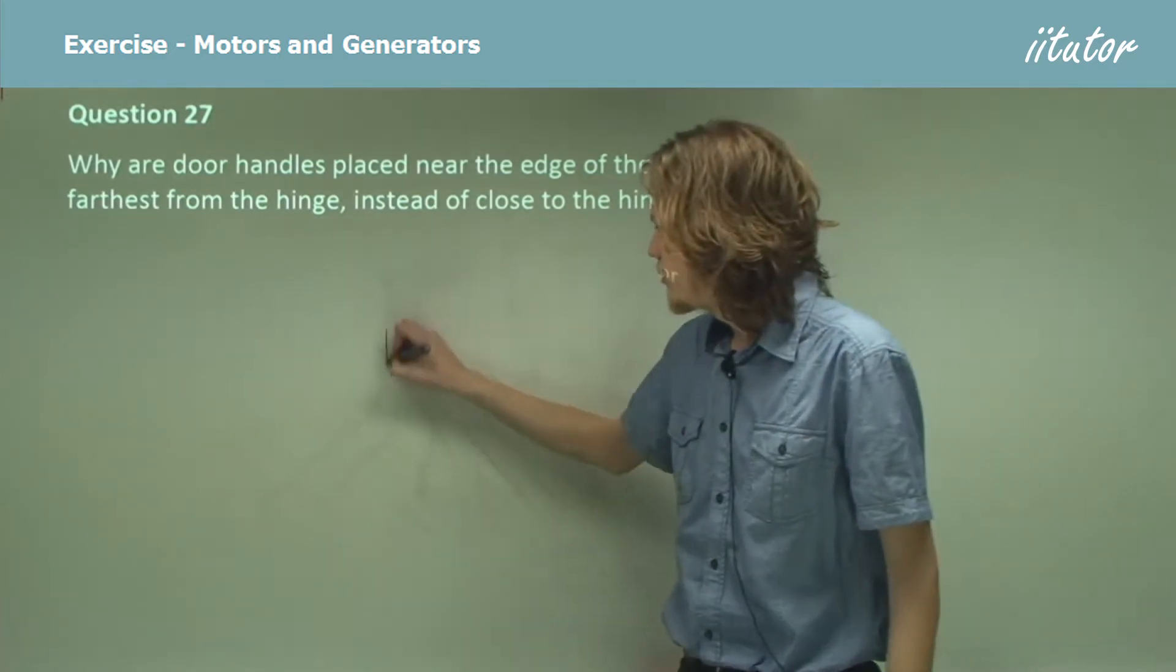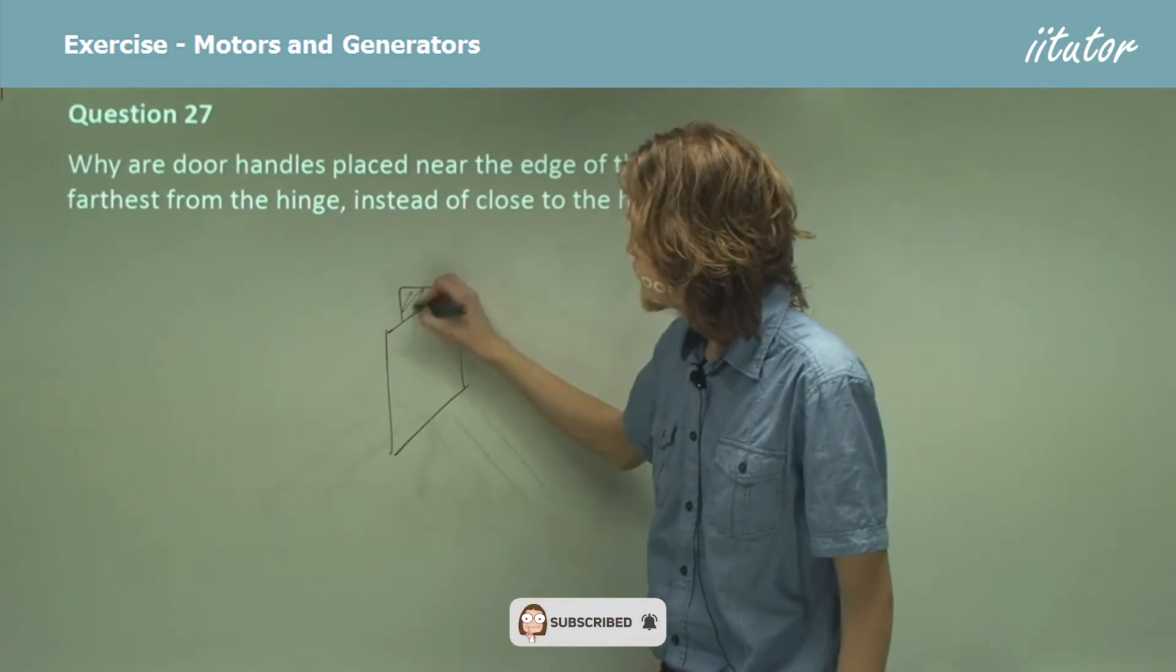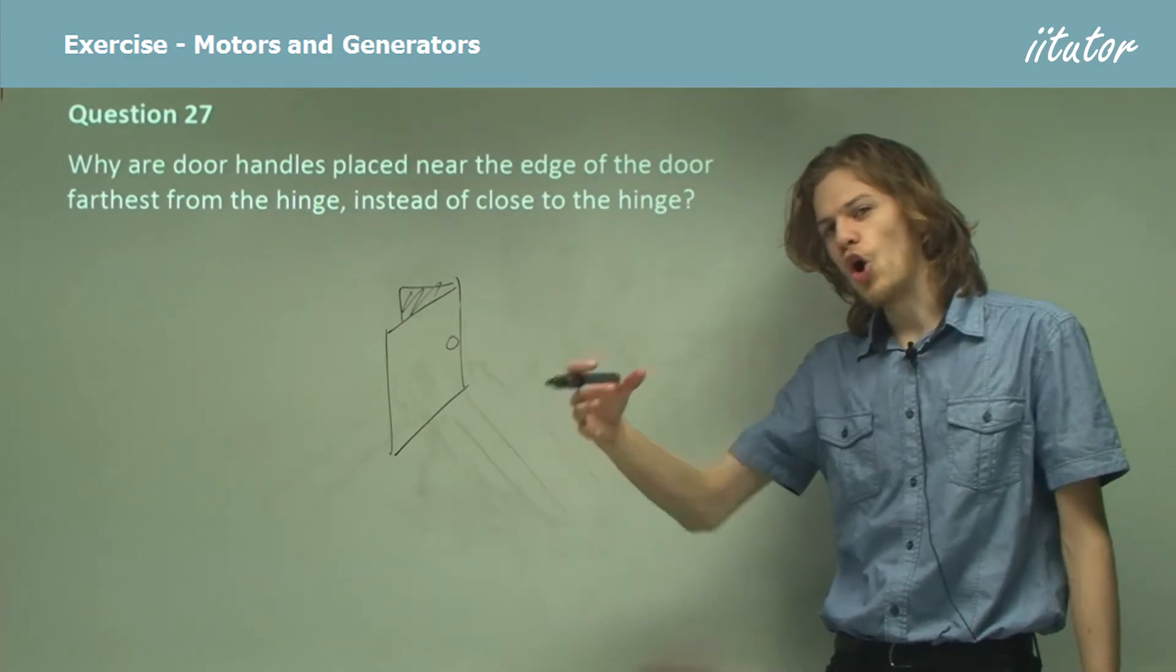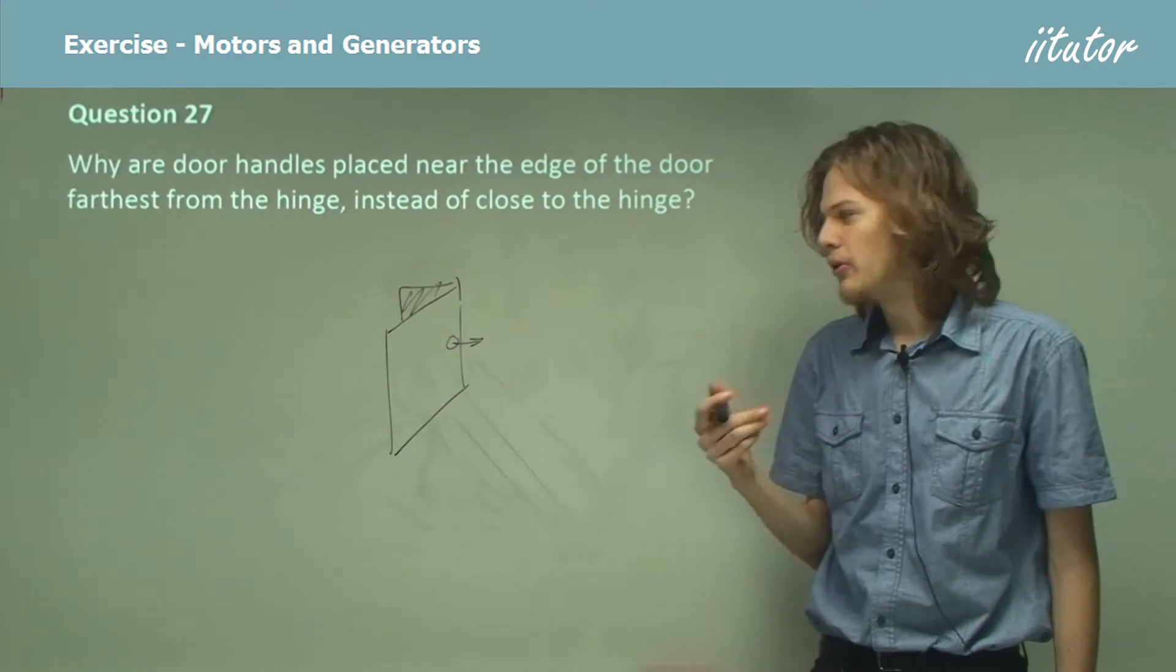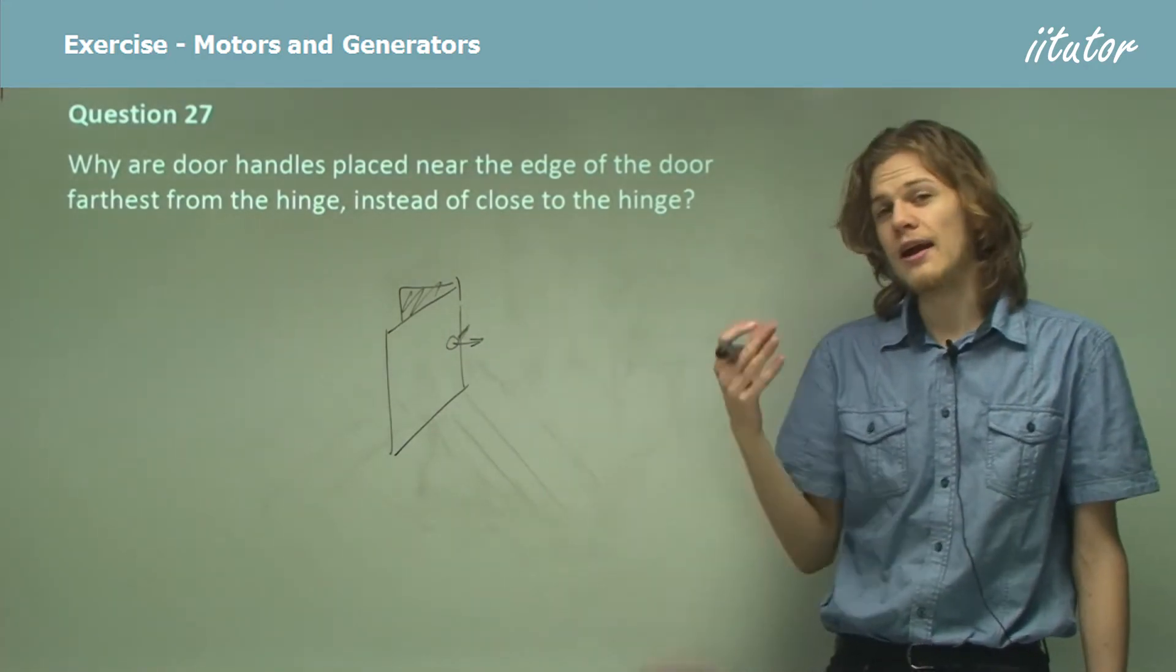If we have a door whose handle is very close to its hinge, so over here, then when we try to open it, we'll apply a force at this point, but the torque won't be very great because there'll be a very small distance between the force and the axis of rotation.